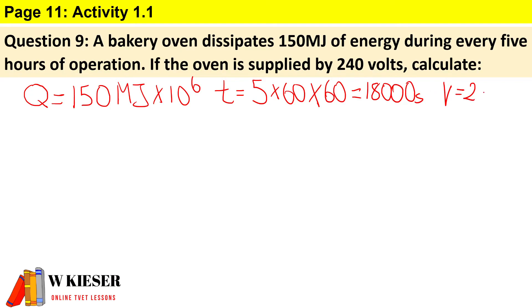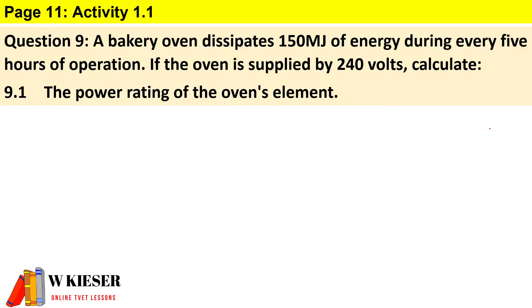Let's look at the first question: calculate the power rating of the oven's element. To show you the different formulas for power: first, P = V × I. Unfortunately, we don't have current. You can also say P = I² × R.